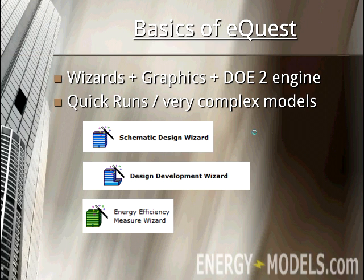The first two wizards — the schematic design wizard and the design development wizard — are used to construct your project, while the last wizard is used to make comparisons. For example, what if you want to try multiple types of glass? The energy efficiency measure wizard, or EEM wizard for short, can model up to ten different options and give you results for each of those.